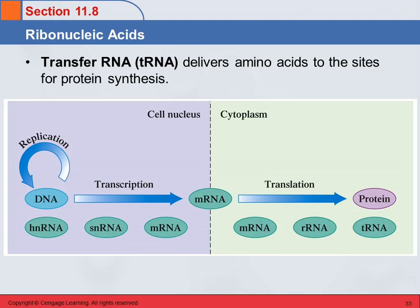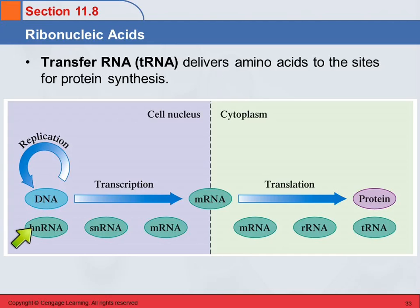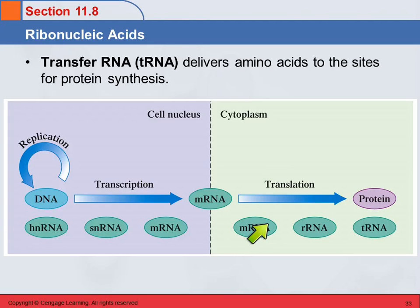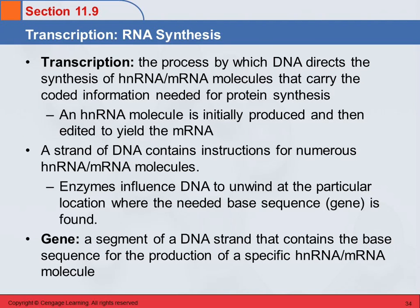In general terms, a cell has a nucleus, and outside the nucleus is the cytoplasm. The DNA is found in the cell nucleus, and the DNA replicates itself as needed. From the DNA, we get the HnRNA. The snRNA helps to convert the HnRNA to mRNA. The messenger RNA moves over to the cytoplasm and interacts with the ribosomal RNA and the transfer RNA to actually make the proteins. That's the overall big picture, and then we'll look at the smaller details.